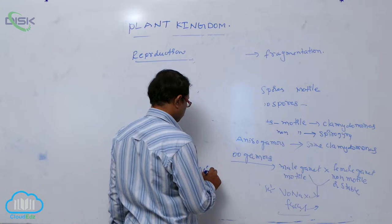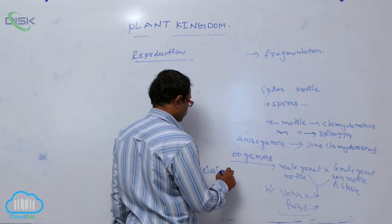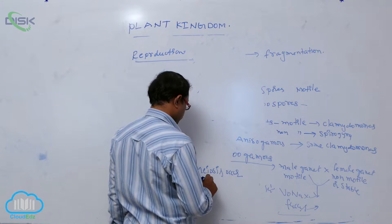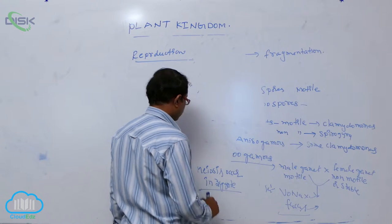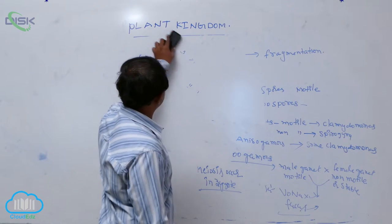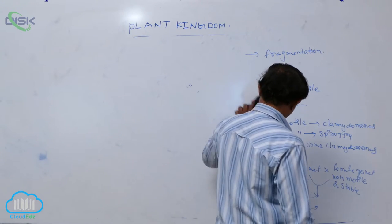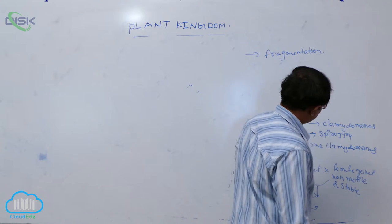Takes place in zygote, meiosis occurs in zygote. So after that, the economic importance of algae.